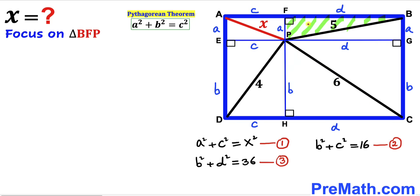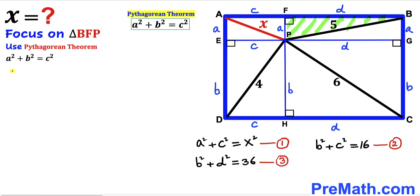Finally, let's focus on right triangle BFP and apply the Pythagorean theorem. Here 5 is the hypotenuse and lowercase a and lowercase d are the two legs. Filling in the formula gives a² + d² = 5², which simplifies to a² + d² = 25. I will label this as Equation 4.